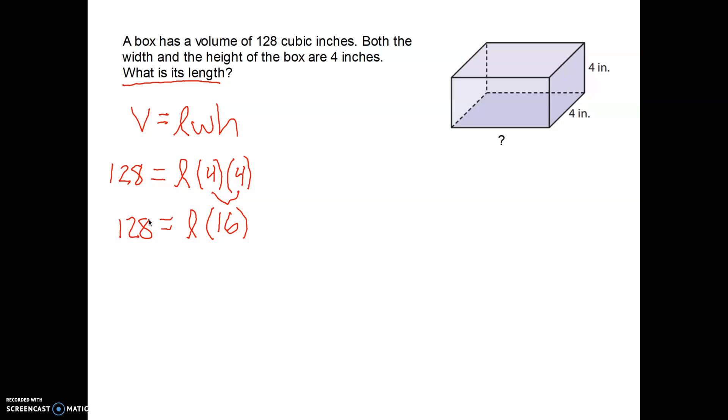Right now the length is being multiplied by 16. Do you guys remember what the inverse of multiplication is or the opposite? The inverse of multiplication would be division. And what I'm going to do is divide this side of my equation by 16 because that will cancel out the multiplication. So that leaves me with L, which is what I wanted. Then remember the golden rule of algebra is whatever you do to one side of the equation, you must do to the other. So I'm going to come over here and divide 128 by 16.